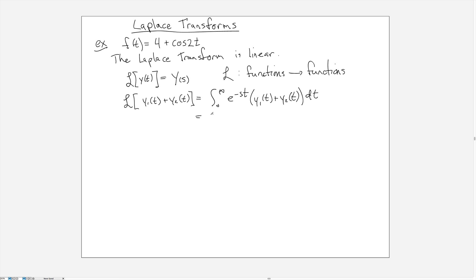Because of the way integrals and multiplication work, I can in a few steps rewrite this as the integral from zero to infinity of e to the minus st, y1(t) dt, plus integral from zero to infinity of e to the minus st of y2(t) dt.